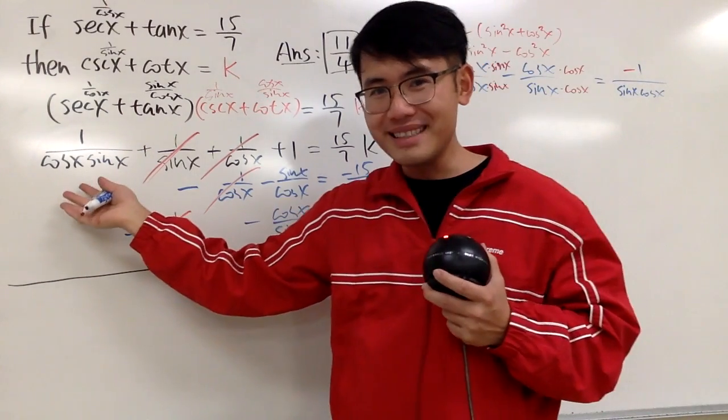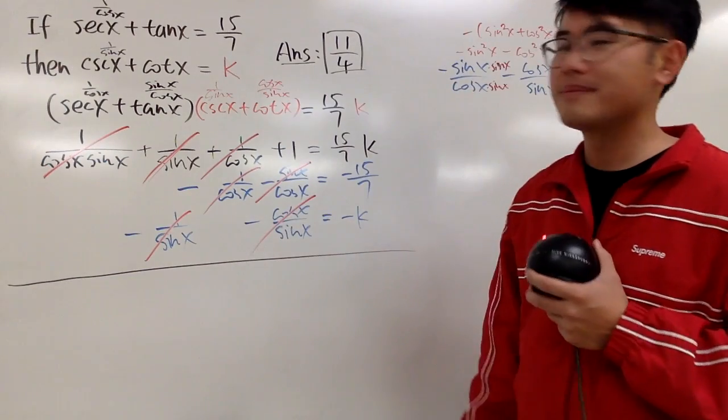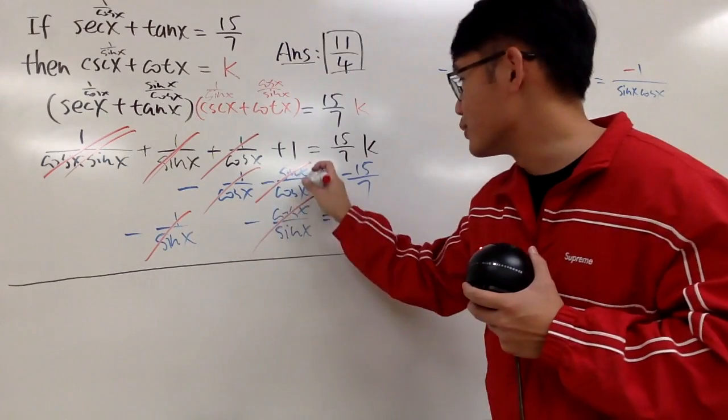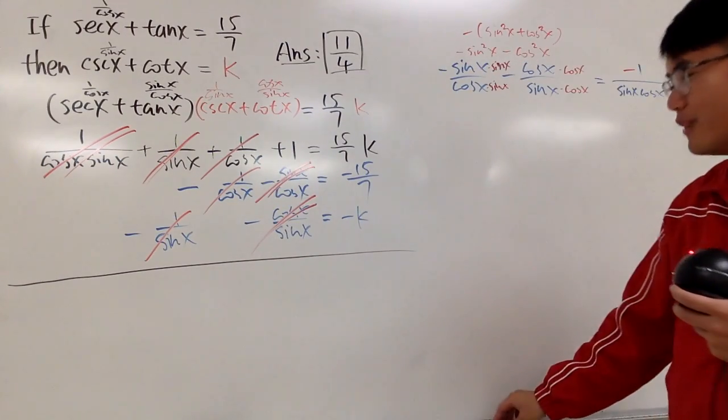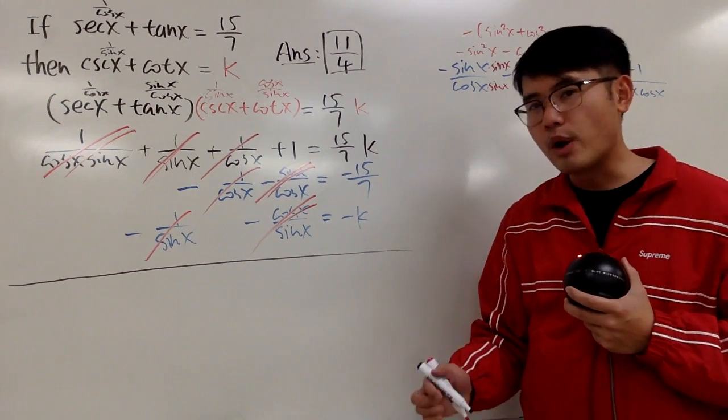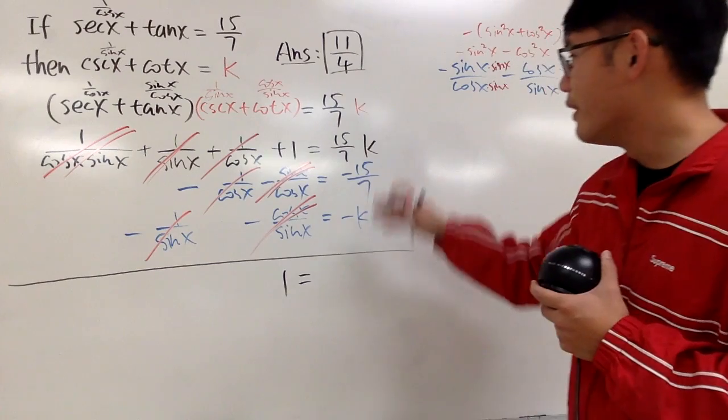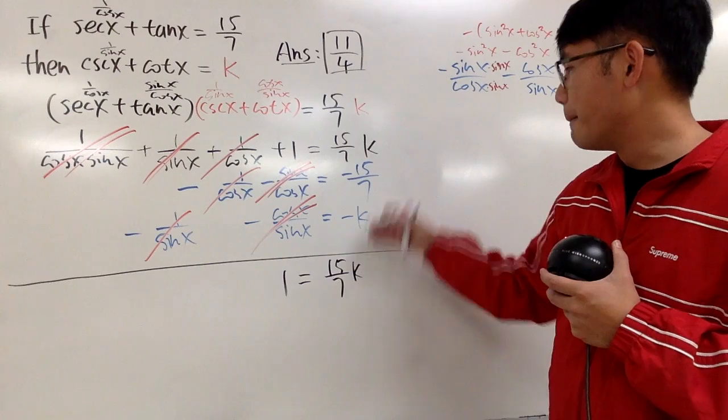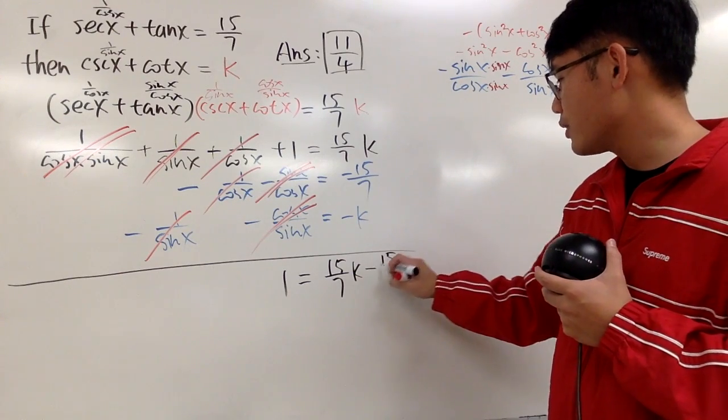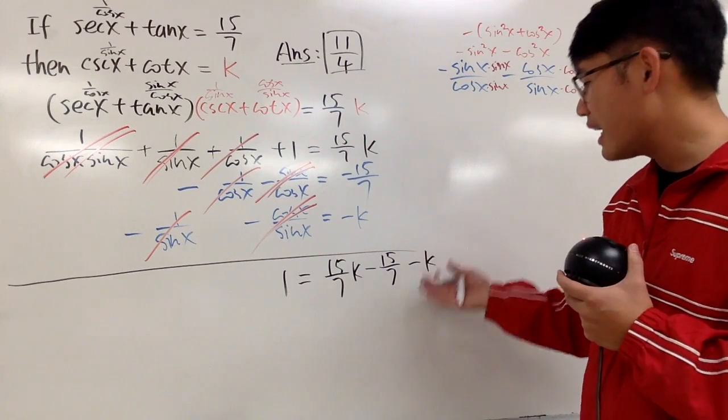Well, we have a positive version right here. So in other words, I can cancel this out with this and that. I'll do it again, just to show you how cool this is. So, we end up with a very nice, simple equation. Namely, 1 being equal to 15 over 7k minus 15 over 7, and then minus k, like that.